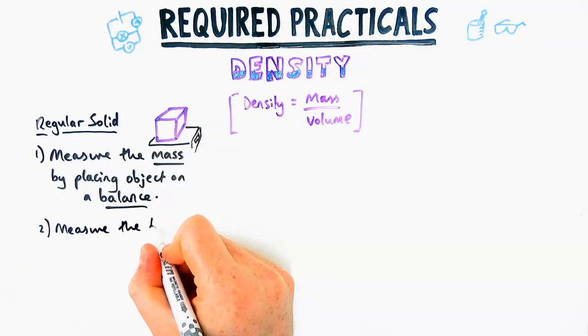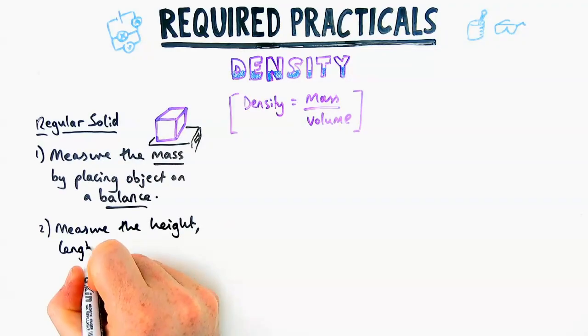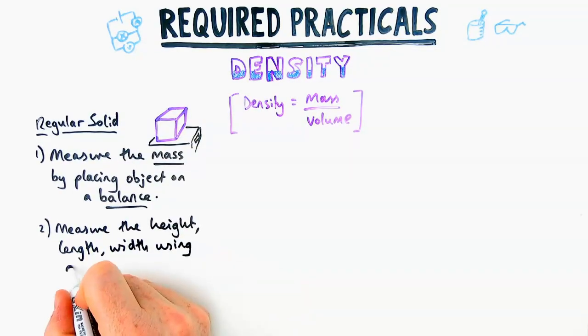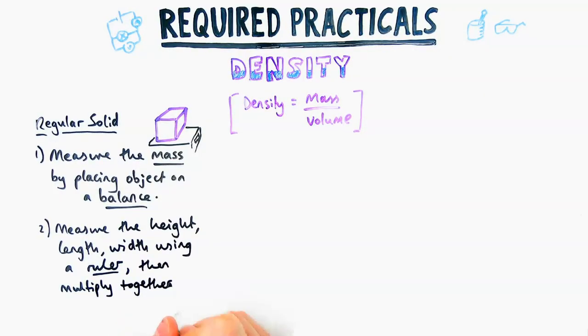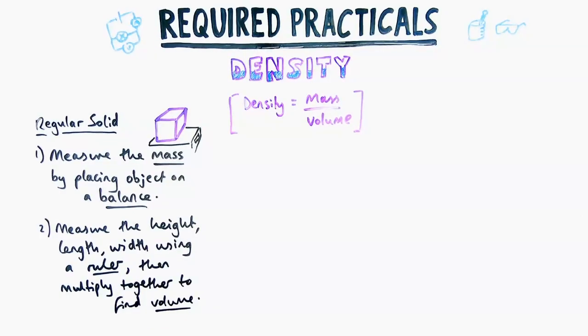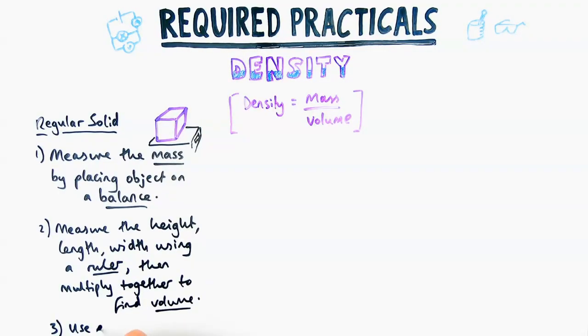Next, to measure the height, length, and width of the object, we are going to use a ruler. Please make sure you include your equipment. To find the volume, you then multiply those three lengths together, so the volume of any cuboid is just length, height, and width multiplied together.